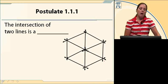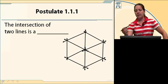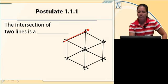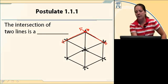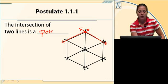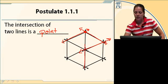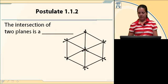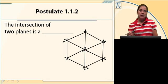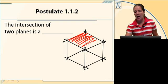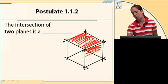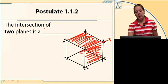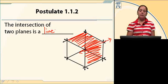We have some postulates. The first one is the intersection of two lines. This represents a rectangular box or a room. If you take two lines that cross, their intersection is a point. The intersection of two lines is a point. The intersection of two planes: let's look at this ceiling — the top of my box — and this wall, the side. Those are two planes, and they intersect along a line. So the intersection of two planes is a line.